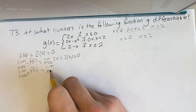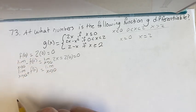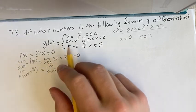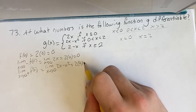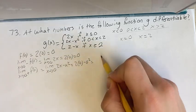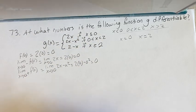And then going from the right, we get the limit as x goes to 0. From here, since x is greater than 0, 2x minus x squared equals 2 times 0 minus 0 squared equals 0 minus 0 equals 0. So it's continuous.